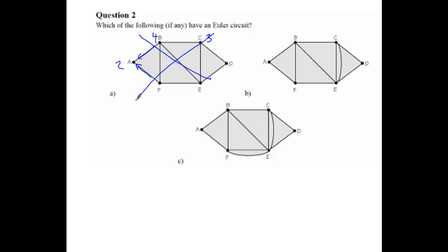If I look here at B, F has 3 edges going into it, and therefore it does not have an Euler circuit.